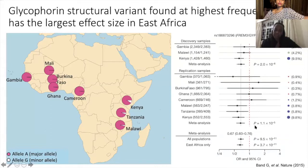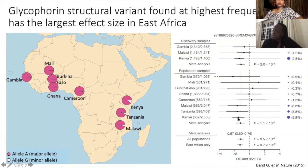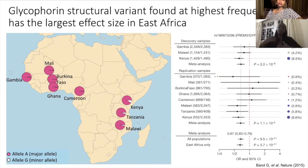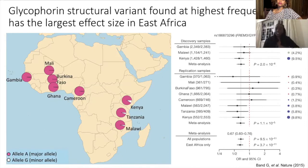The odds ratio for this mutation in the Kenyan population is about 0.6, representing a protective factor of about 40%. People who carry one copy of this glycophorin mutation have 40% protection against malaria, and people who carry two copies have up to 70% protection. This protective effect is equal in magnitude to the sickle cell effect, which made this quite exciting for us.